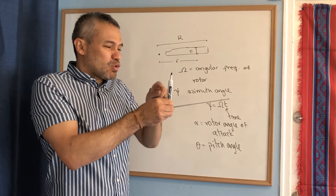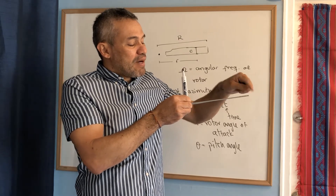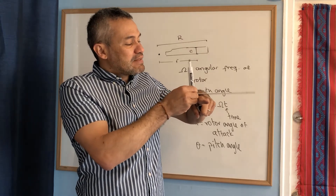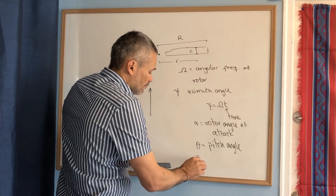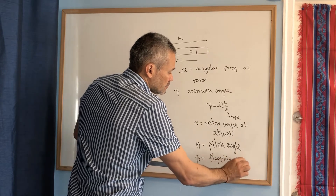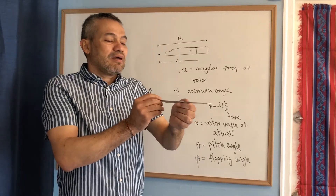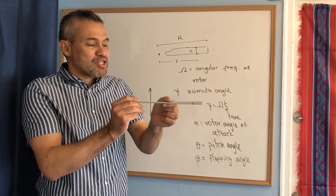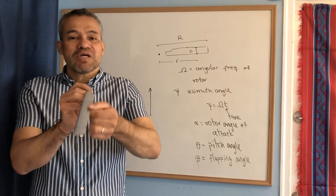If you consider a line perpendicular to the vertical line and also perpendicular to the line going through the center of the blade, the motion along that line is measured by an angle called the flapping angle, denoted by beta. So we have three angles: the azimuth angle psi, the pitch angle theta, and the flapping angle beta — which you can think of as an up-and-down motion.